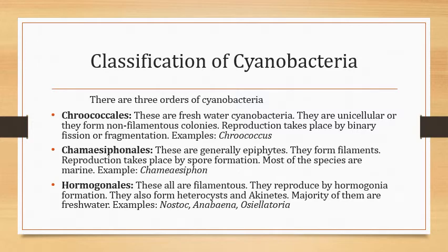Classification of cyanobacteria: there are three orders. First is Chroococcales — these are freshwater cyanobacteria. They are unicellular or form non-filamentous colonies. Reproduction takes place by binary fission or fragmentation. Example is Chroococcus.